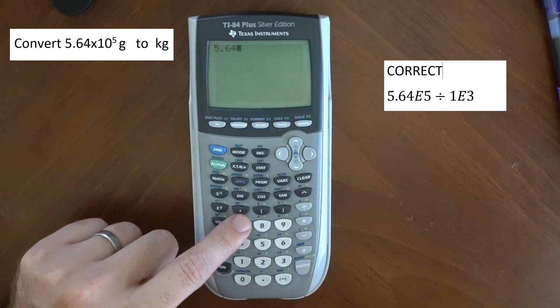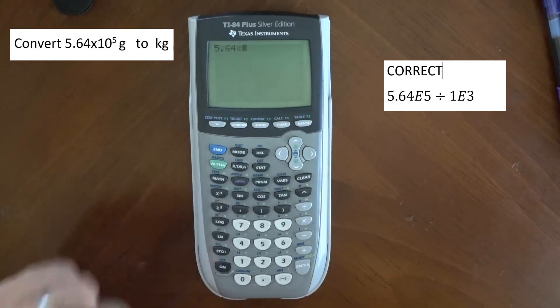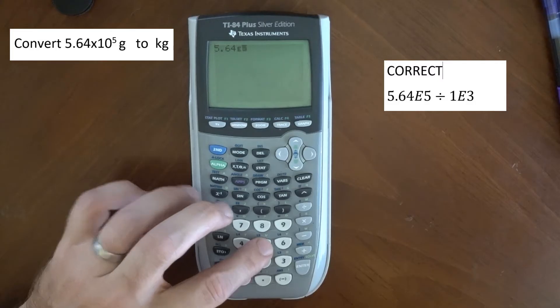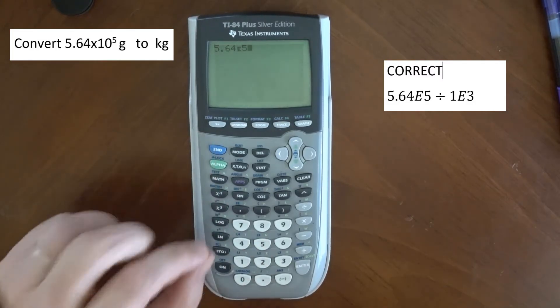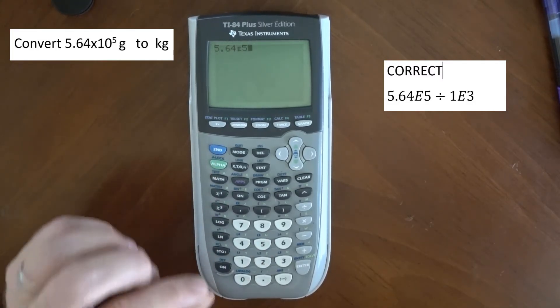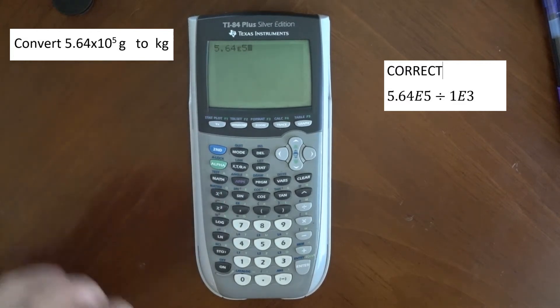It's above the comma, so I'm going to type 2nd EE, and then 5. That EE means times 10 raised to some power, and that power is 5, whatever comes after the E.